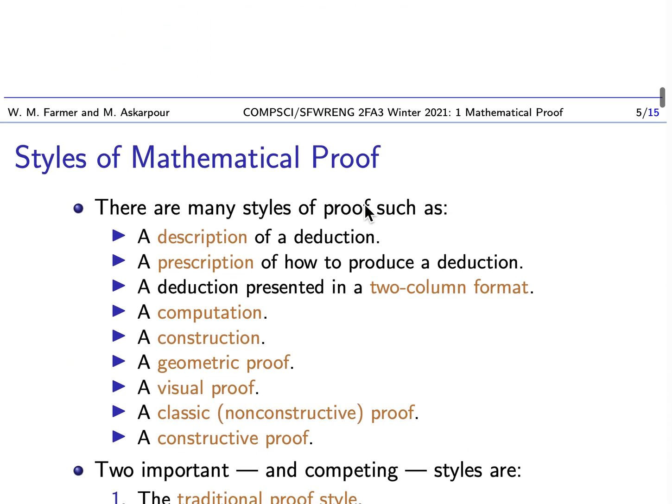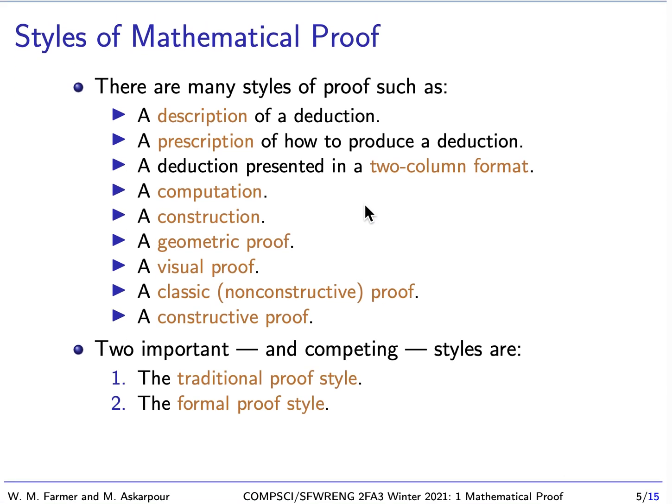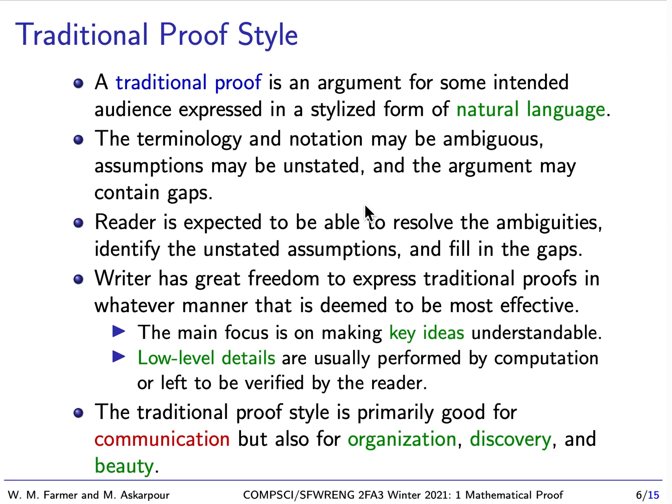There are two very important and competing styles of proof: the traditional proof style and the formal proof style. In this course we're going to focus on the traditional proof style, whereas in your previous course 2DM3 you were looking at the formal proof style — and these two styles are quite different from each other. The traditional proof style is an argument intended for a particular audience and expressed in a form of natural language — a stylized natural language that uses certain mathematical notation and formulas. By natural language, I mean a language like English, German, Russian, or Arabic.